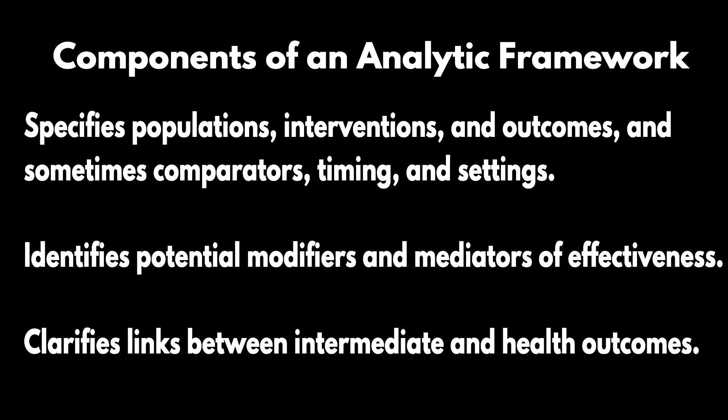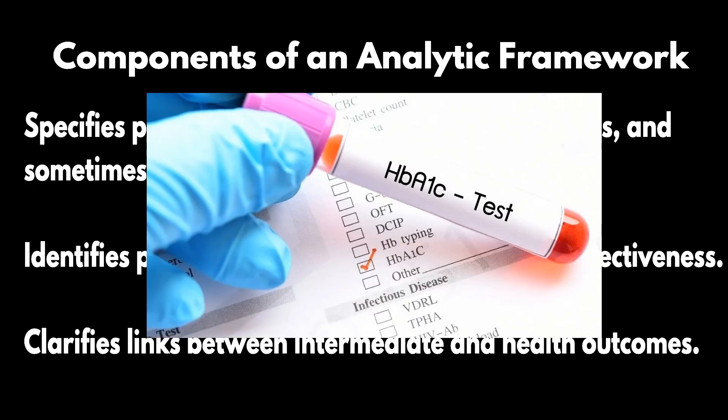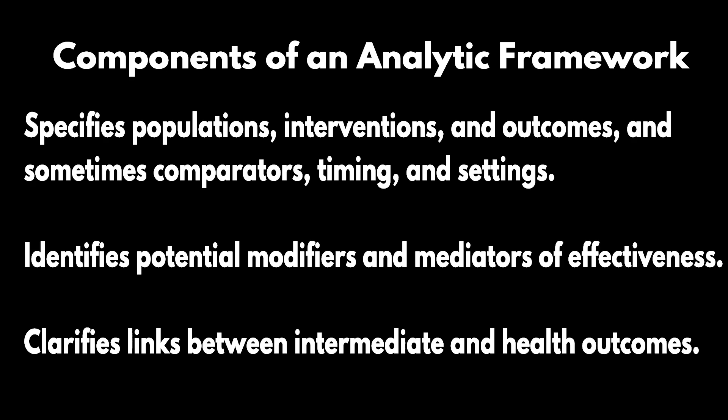An analytic framework specifies the population, the interventions or exposures to outcomes, and sometimes you'll see timing, settings, and comparators put in. It clarifies the links between the intermediate outcomes and the health outcomes. Take the example of hemoglobin A1c, as it would be measured in a study of people with diabetes or who are at risk of diabetes.